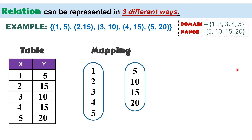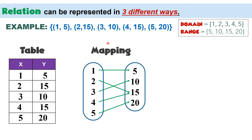To show the pairs in this diagram, we just have to use an arrow to connect the first coordinate to the second coordinate. So for (1,5), we connect 1 to 5. Then (2,15): 2 is here and 15 is over here, draw an arrow. For (3,10): 3 here and 10 over here, draw an arrow. Then (4,15) and (5,20). This is how we present relation using mapping.